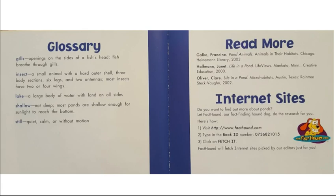At the end of our book, there is a glossary. A glossary tells you what some words mean that you found throughout the story. For example, we heard the word gills — gills are openings on the side of a fish's head, and fish breathe through gills. Another word is insect — an insect is a small animal with a hard outer shell, three body sections, six legs, and two antennae. Most insects have two or four wings. We also heard the word lake — a lake is a large body of water with land on all sides, bigger than a pond.